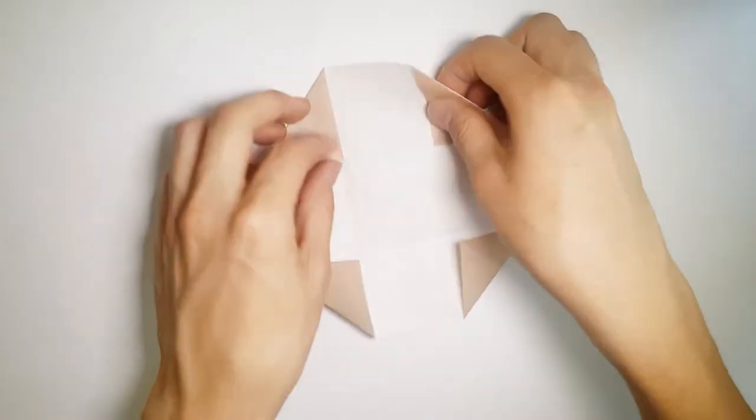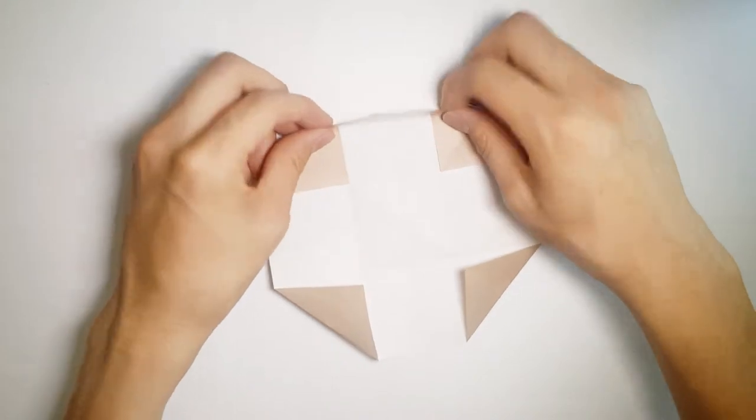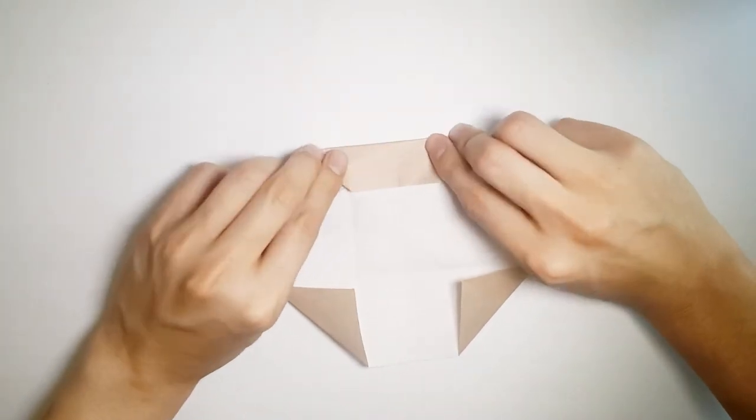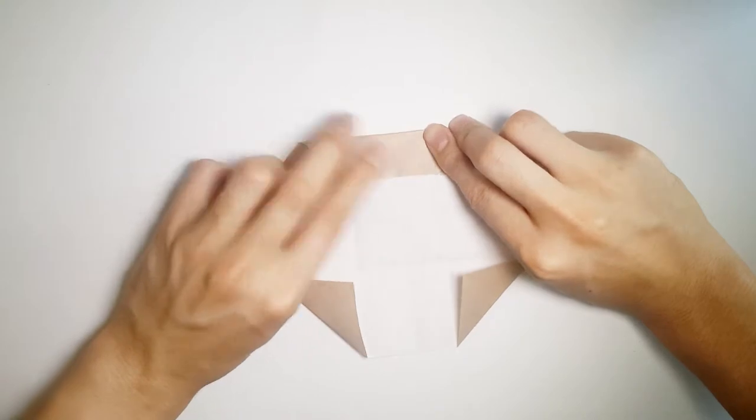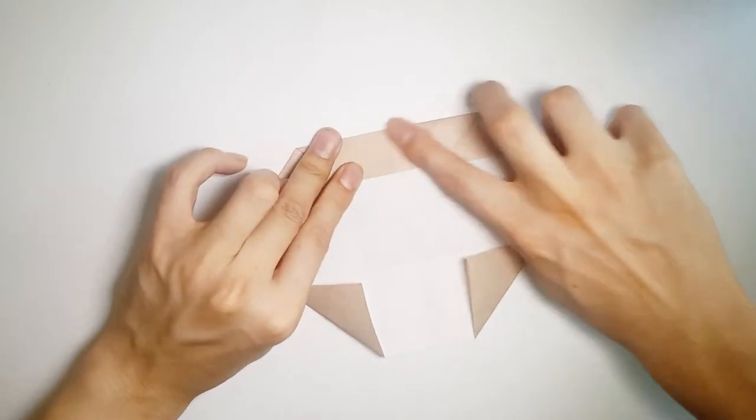Now we're going to fold all the sides in to meet with the crease, and so the middle should form a square by the time all the sides have been folded.